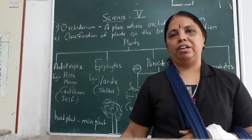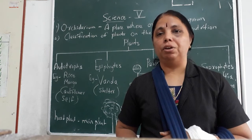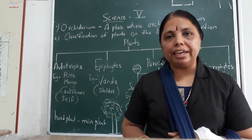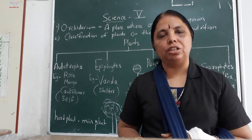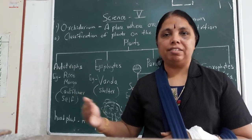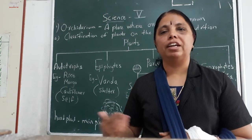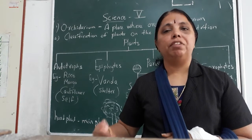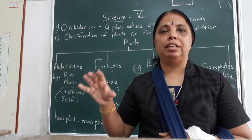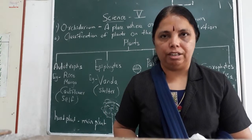So, the first point I have written is the word orchidarium — it is a place where orchids are grown, various types of orchids. Now the second point is classification of plants on the basis of nutrition. What is classification? Classification means grouping of plants on the basis of nutrition — how they get the food and how they utilize it. All plants cannot prepare food. There are some plants who have to depend on others.